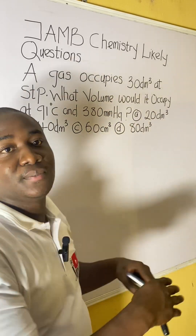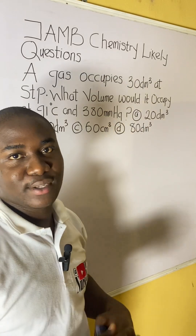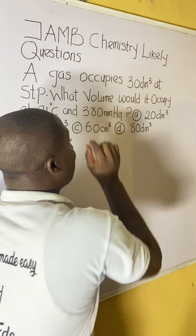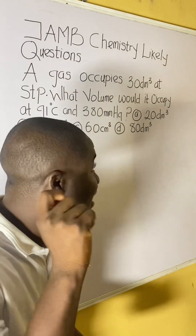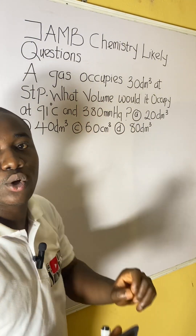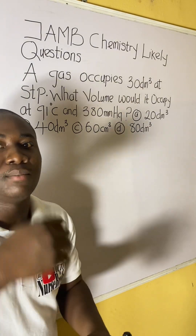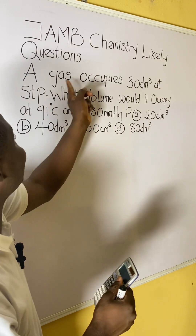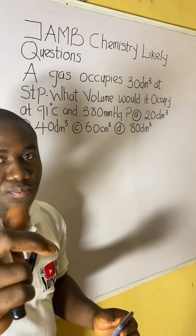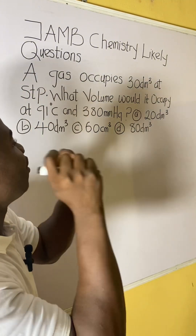If you came across this question in your JAMB exam, here is how to solve it — it is very easy. Let's solve together. The question says a gas occupies 30 dm³ at STP. This first statement in the question is very important, and as a student preparing to write the JAMB exam, it is important for you to understand this statement first before we go ahead to solve.